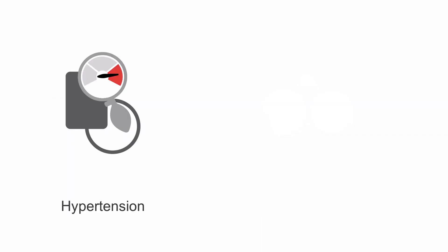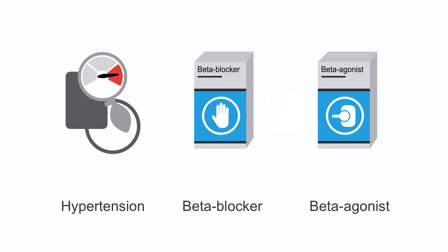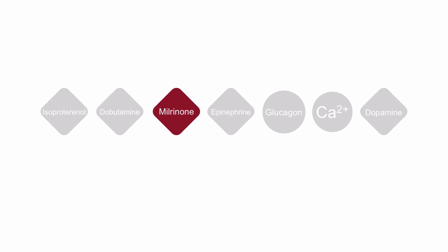For patients with high blood pressure, pulmonary hypertension, or those taking beta blockers or beta agonists, milrinone may be a more effective agent.